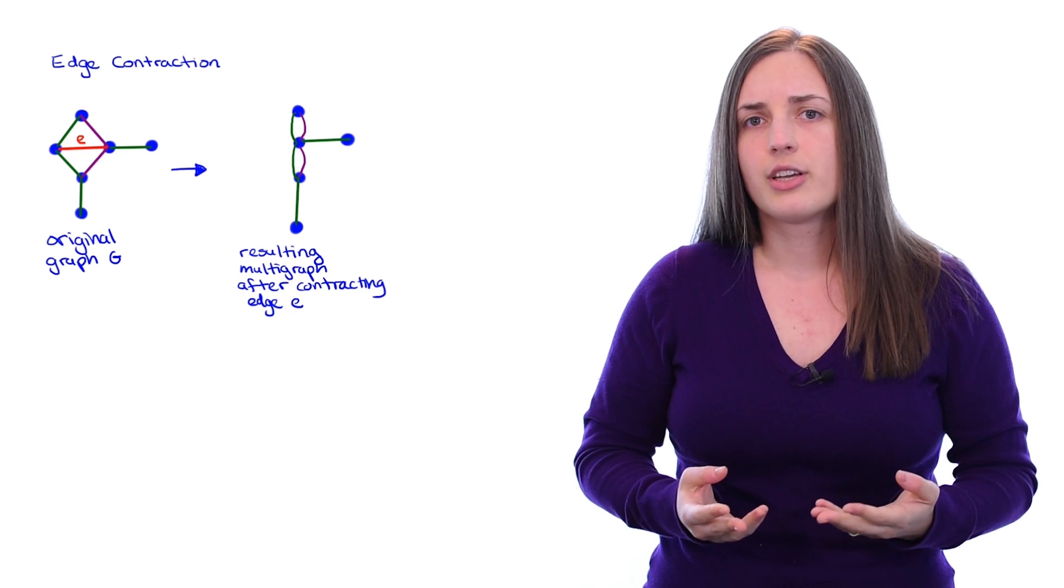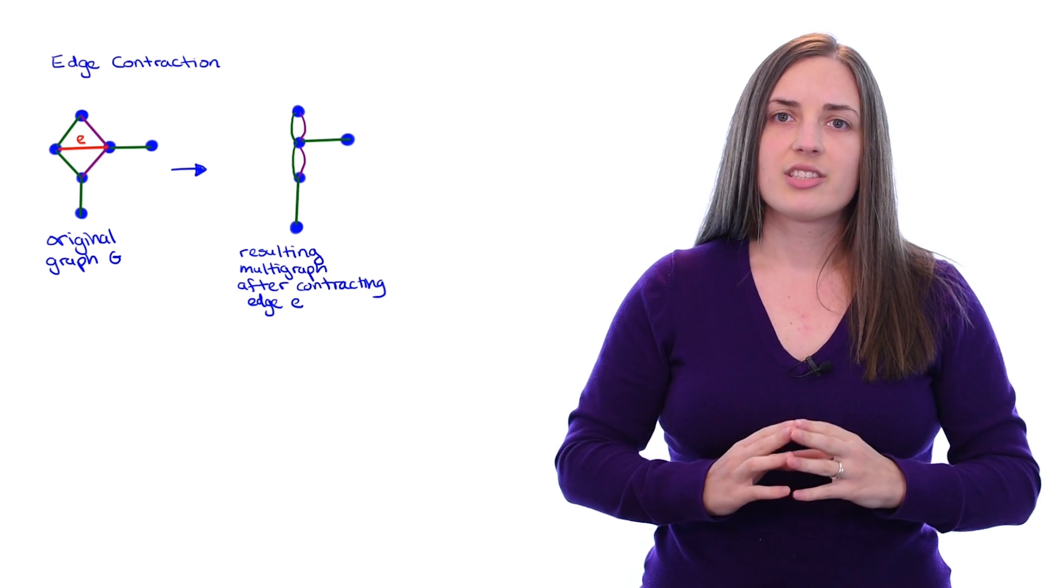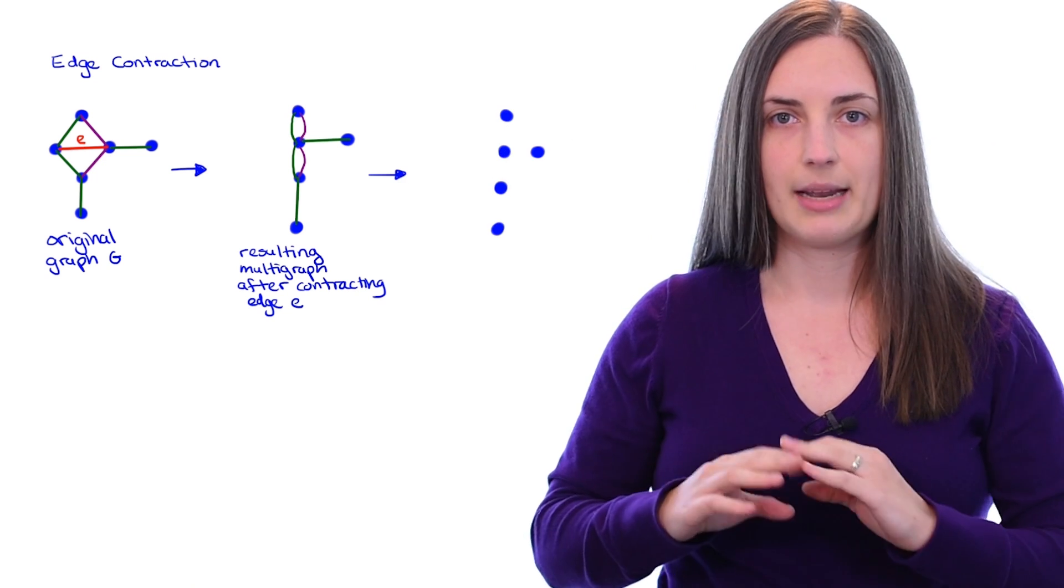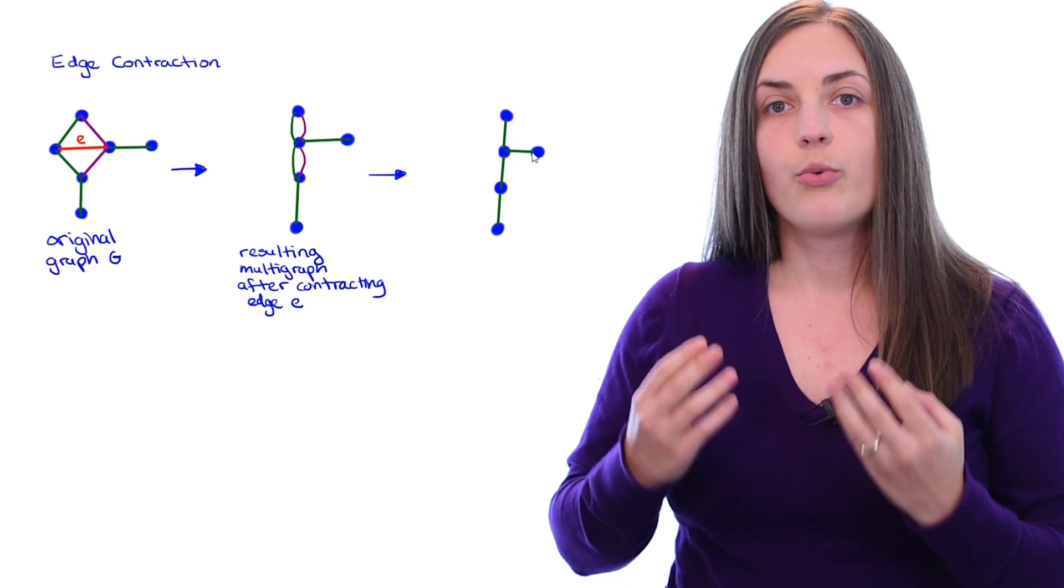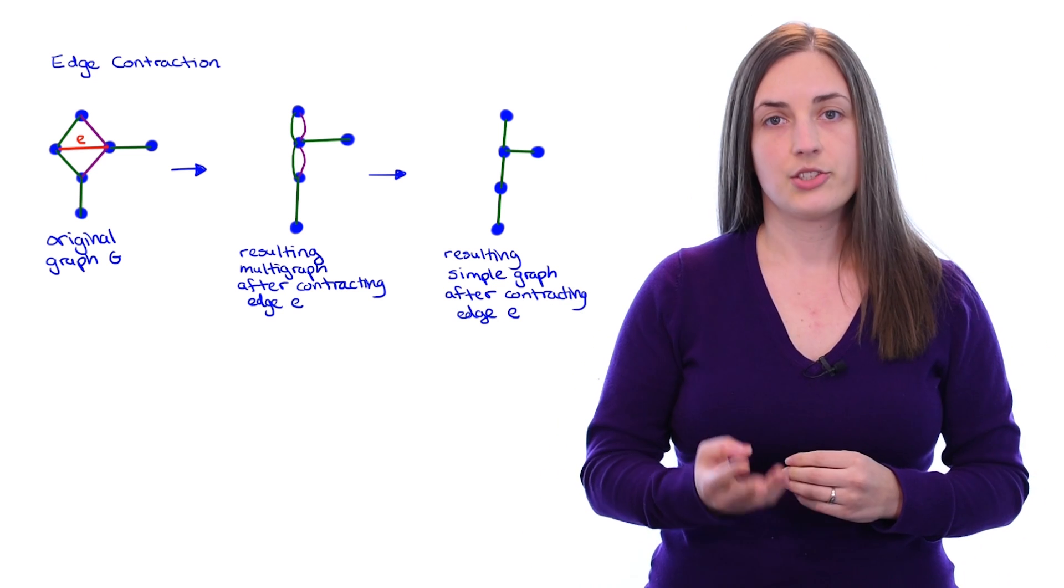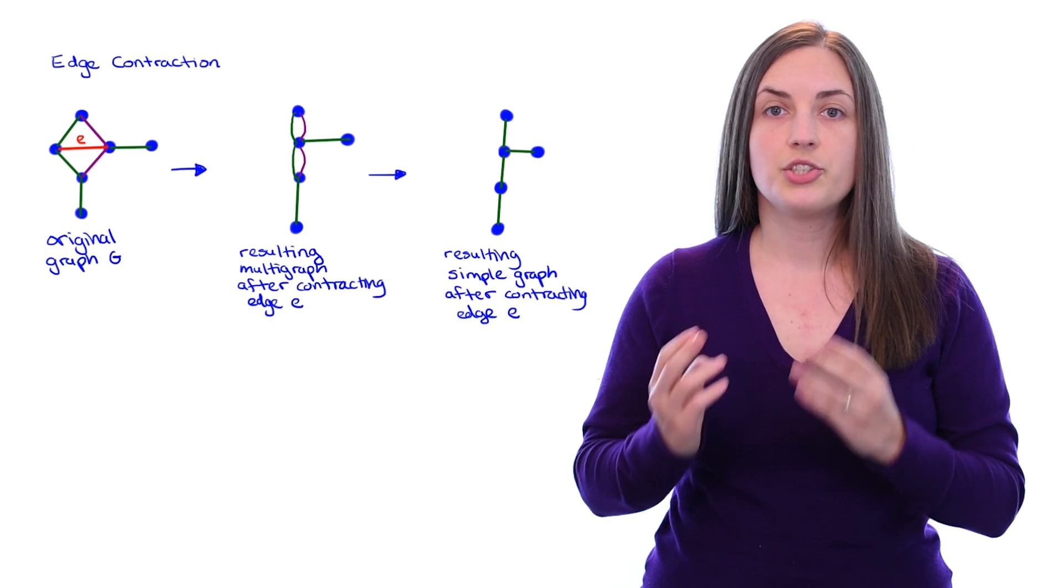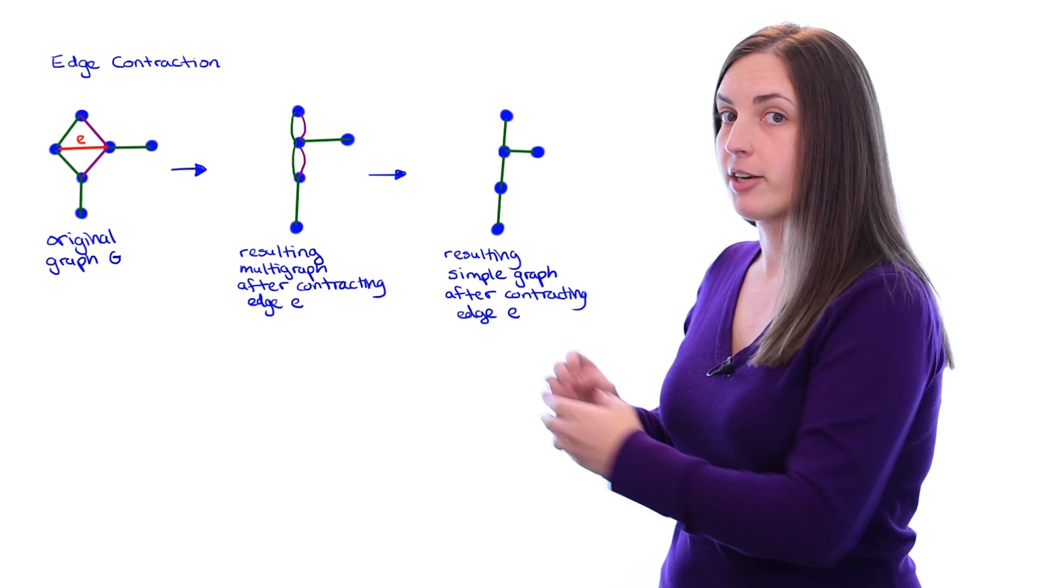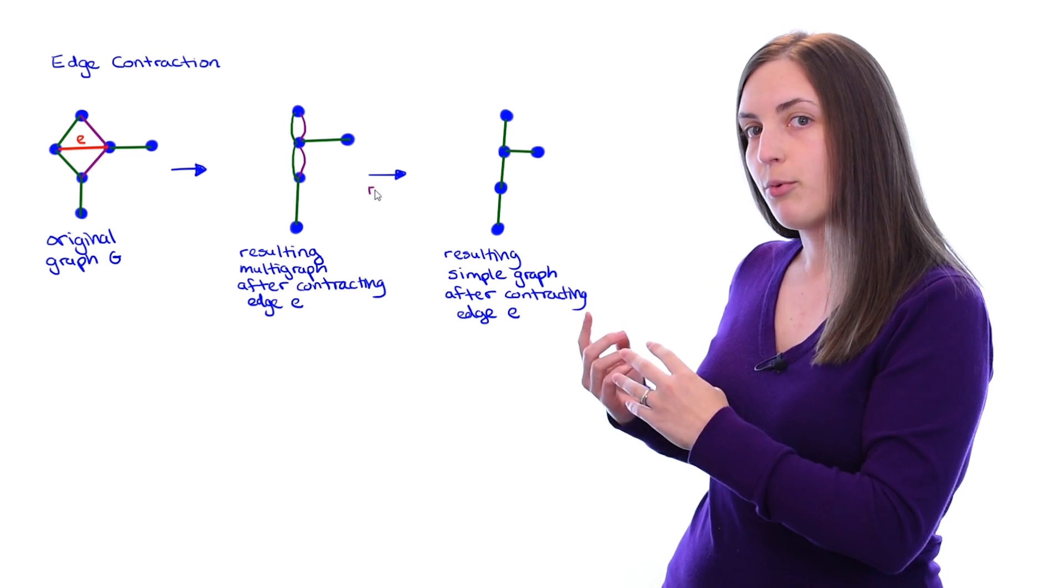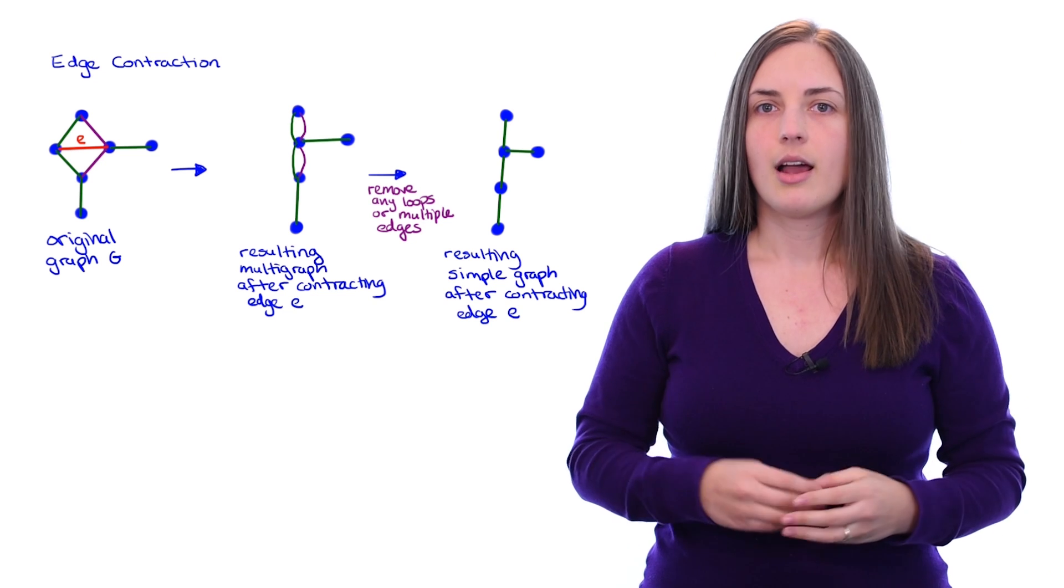Now since we are often looking at simple graphs, we may wish to consider contracting an edge and then looking at just the simple graph that results. If we delete any loops or multiple edges that may have occurred during the contraction, we'll get a resulting simple graph. In certain situations it may be appropriate to consider multigraphs, but if you want to consider only simple graphs, you remove any loops or multiple edges.